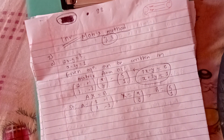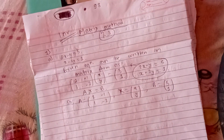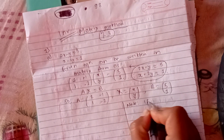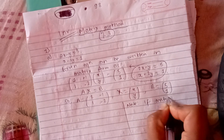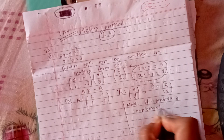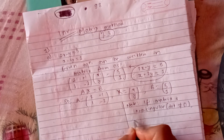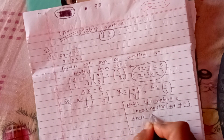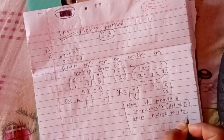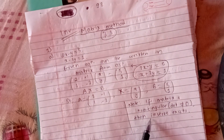Now, we have to check if the inverse exists. If we use the inverse matrix method, we can apply it only when the matrix is non-singular — that is, the determinant is not equal to zero. Then the inverse exists.